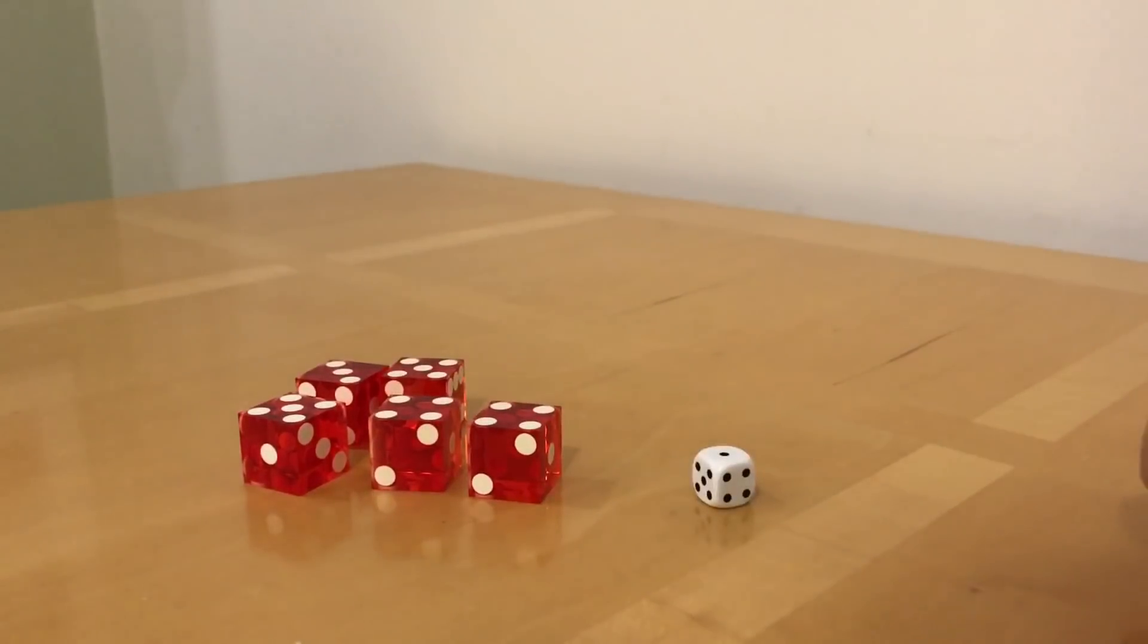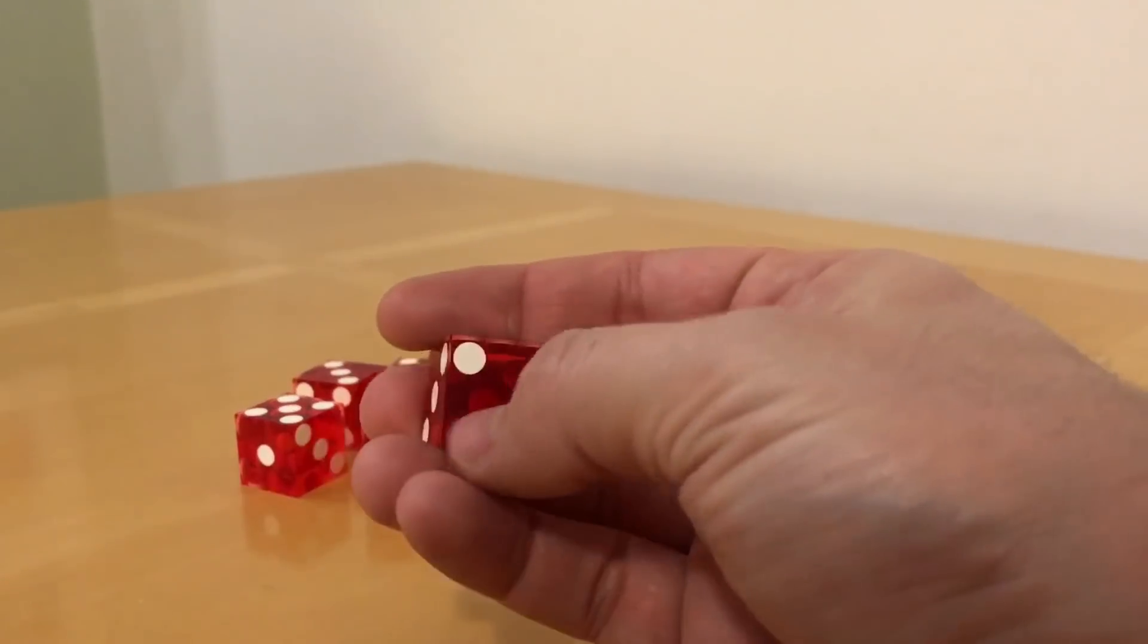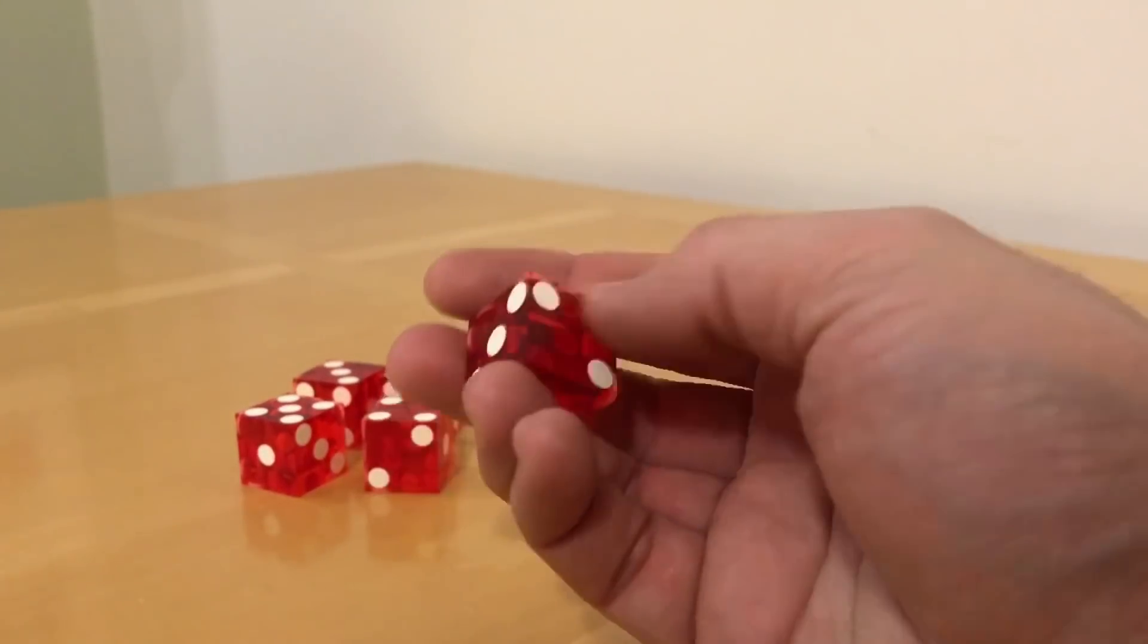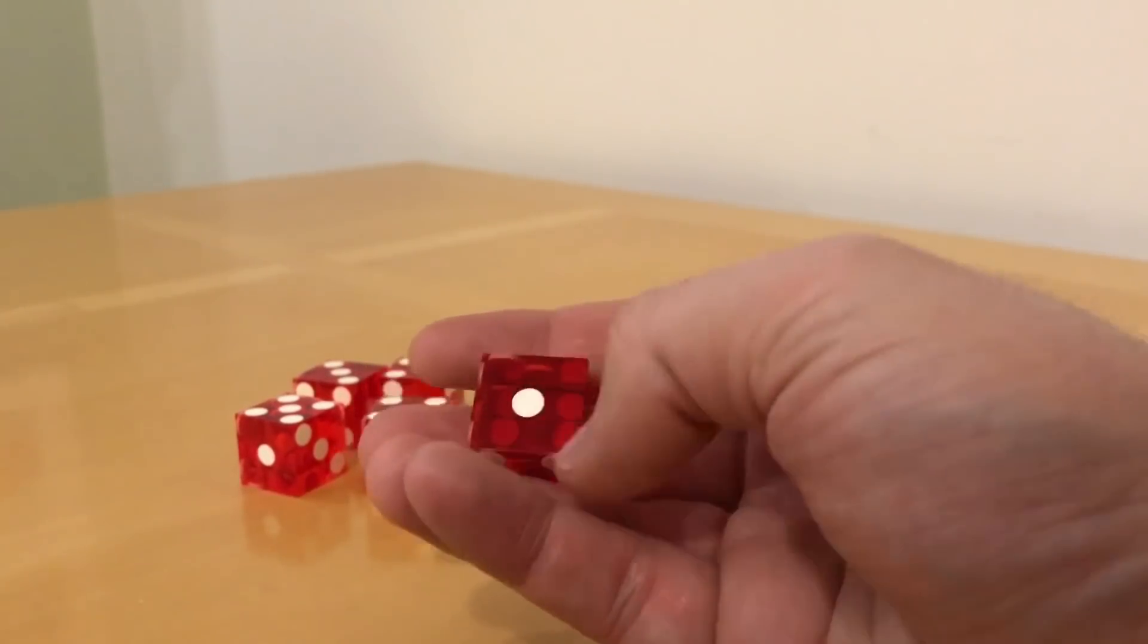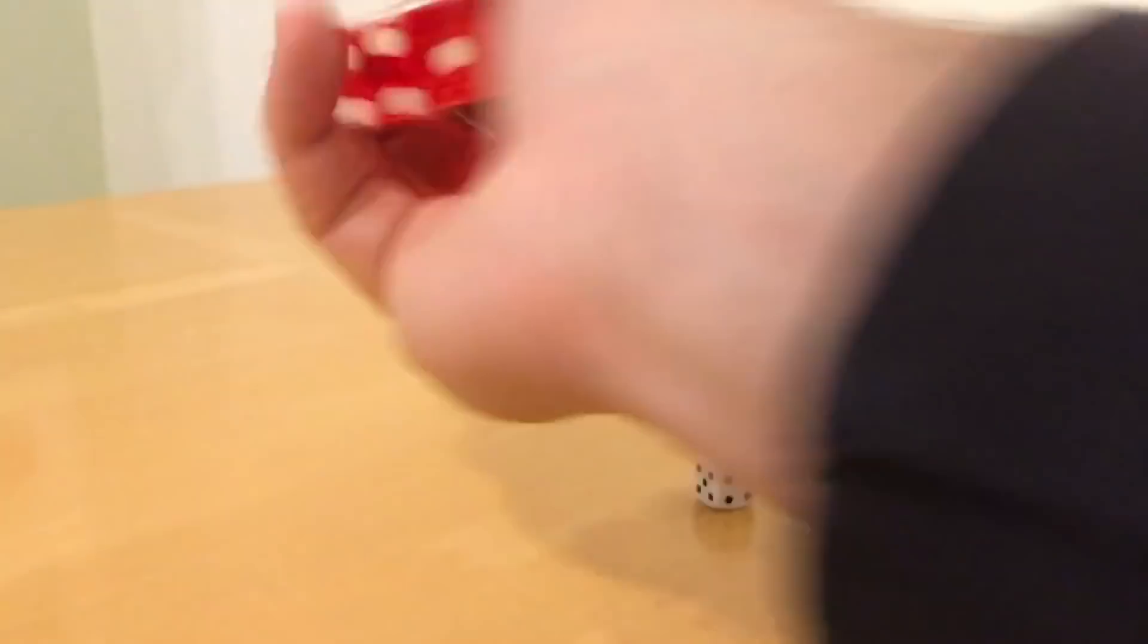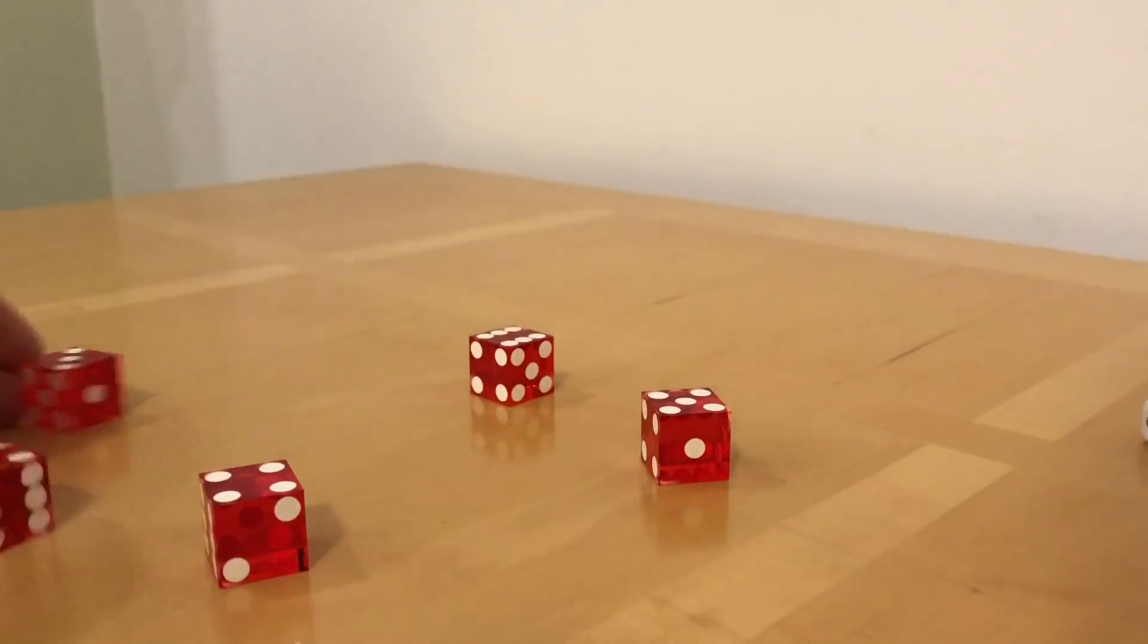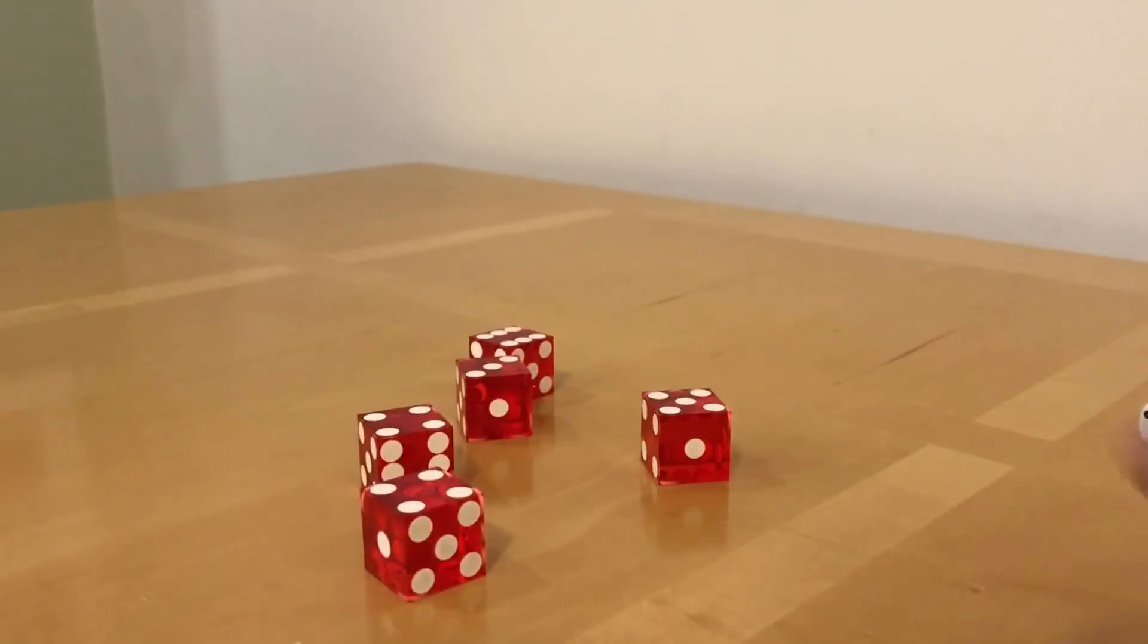These cost me £9 including the postage and that was in the UK. You can get used casino dice for maybe a little bit cheaper, and they've got somehow printed on like a hallmark, normally on the one face, the name of the casino that they originated from. Let's have a little roll. That's not too bad for a first roll, is it?